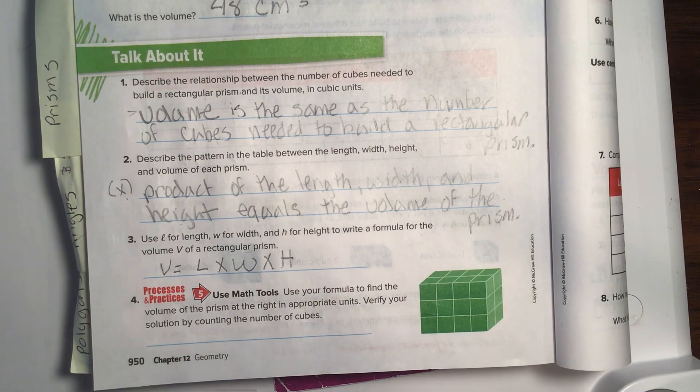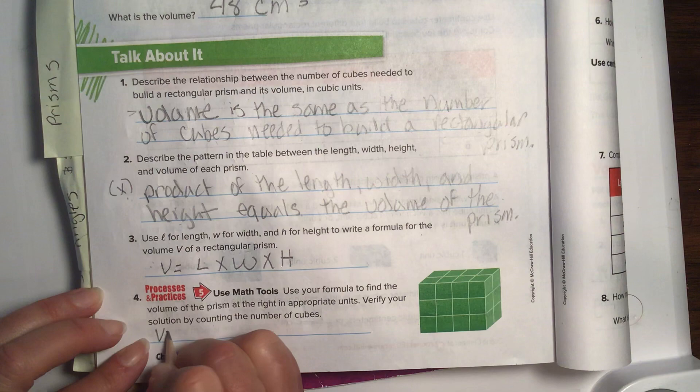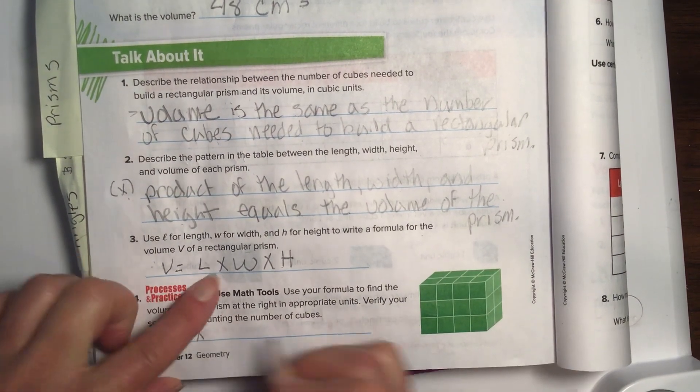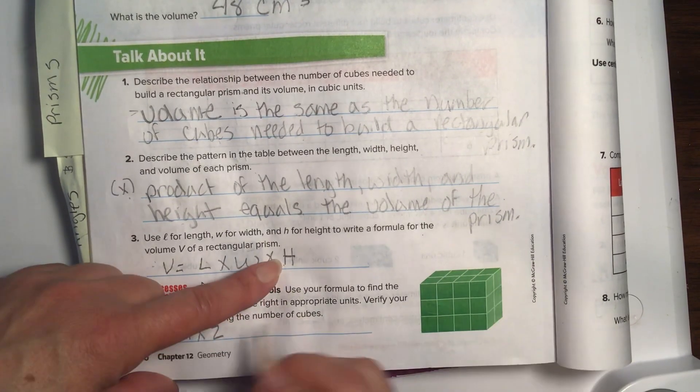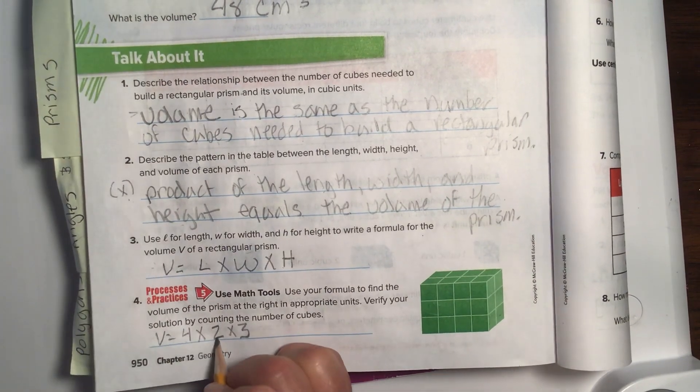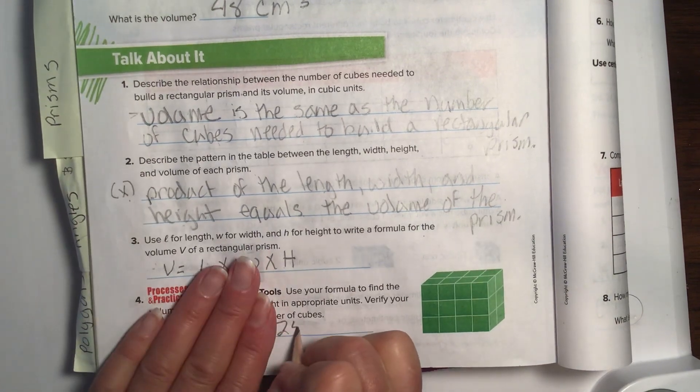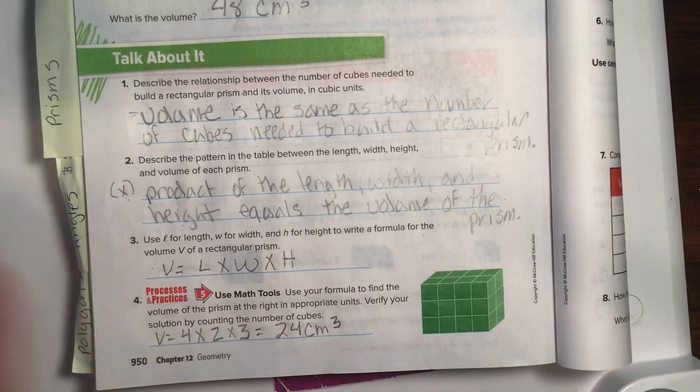Number four. Use your formula, that we just wrote right here, to find the volume of the prism to the right in appropriate units. Verify your solution by counting the number of cubes. Alright. So, let's just plug in the numbers. Volume. So, here's the length. One, two, three, four. Four. The width. One, two. And the height. We have one, two, three. So, four times two is eight. Eight times three is 24. And because it is a cube, we need to do cubed. Let's count.